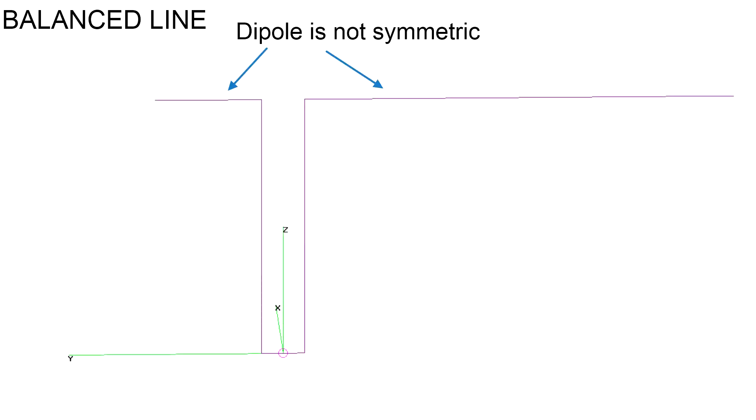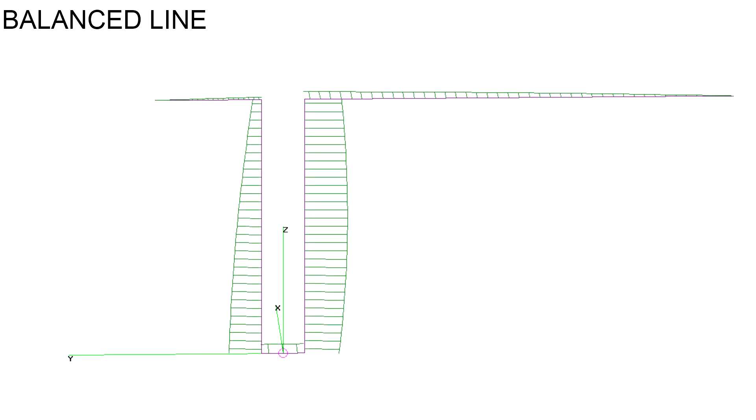Same thing happens if the antenna is not symmetric. The currents that develop on the balanced line are not symmetric, the fields do not cancel and the line, again, radiates.